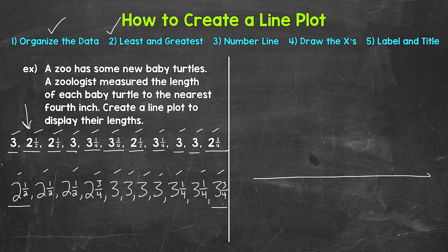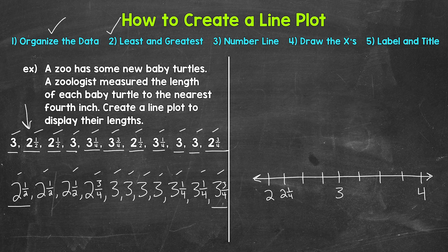Let's draw the line with our whole numbers: two, three, four. Now we include the fourths by splitting the whole numbers in half and then splitting the halves in half — that gives us fourths. So we have two and one fourth, two and a half, two and three fourths, then three and one fourth, three and a half, and three and three fourths. That's our number line, and remember those numbers represent inches — we'll label that at the end.